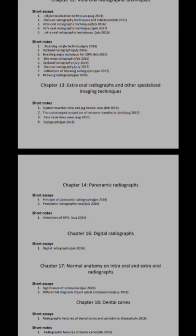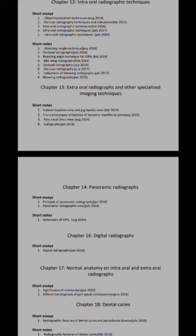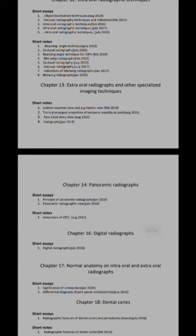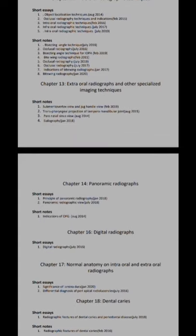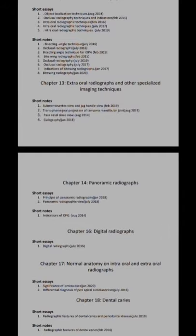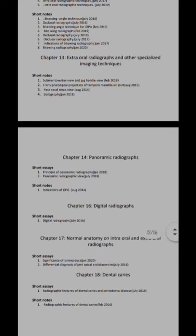For object localization techniques, explain the need for localization — the radiograph is two-dimensional, unlike CT or CBCT, hence this is required. Then explain the various techniques: the buccal object rule (Clark's rule or SLOB technique), and use of two different radiographs at different angles such as occlusal and IOPA. For intraoral techniques as a short essay, you can draw diagrams for periapical radiographic techniques. For bitewing, briefly state its indication.